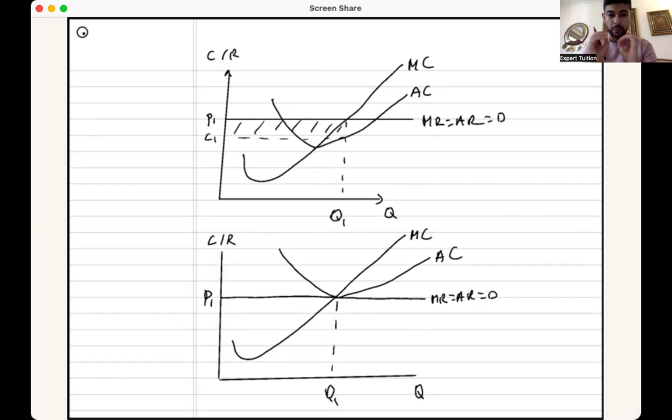Right. Question number one, is that firm productively efficient? Well, this time the answer is yes, because the bottom of the AC curve, MC equals AC, that's the output we're producing. Is that firm allocatively efficient? Once again, the answer is yes, because MC equals AR right there. Hence the same level of output. You see that diagram at the bottom is the only time ever, ever, ever where a firm will be both productively and allocatively efficient. It will never happen again. It only occurs in long run perfect competition.